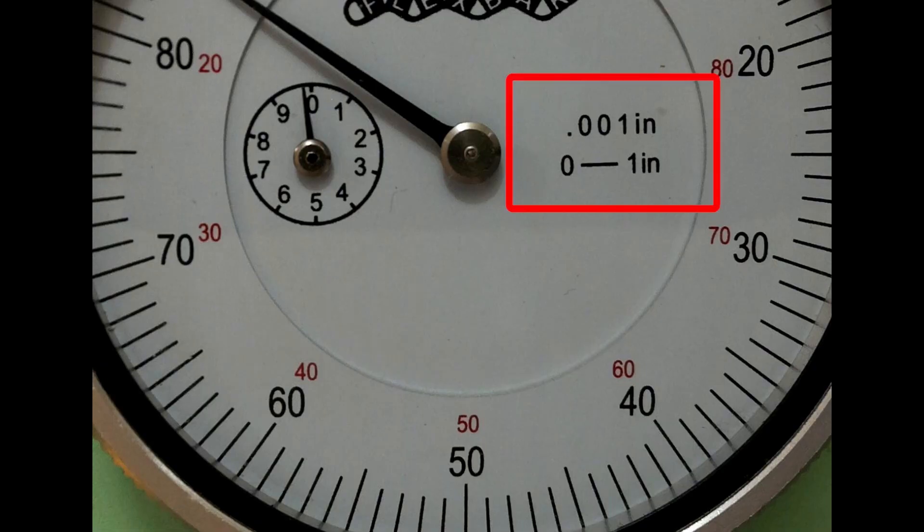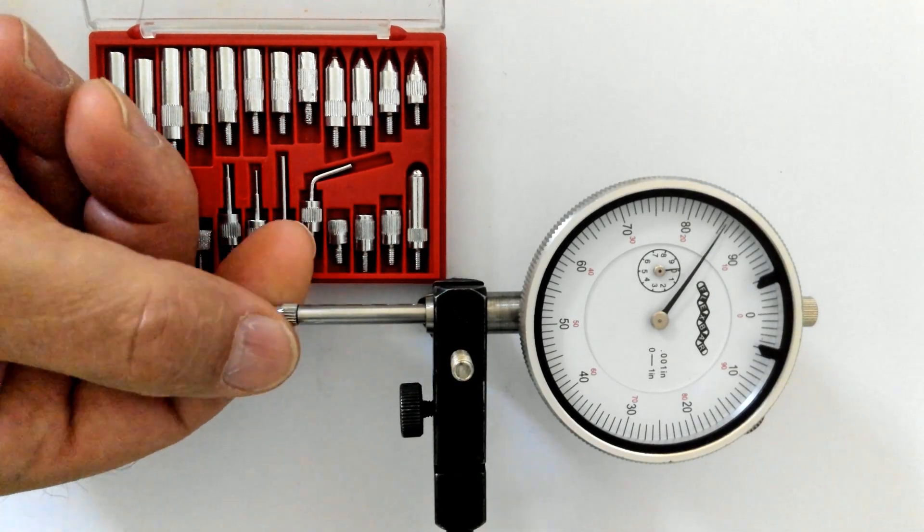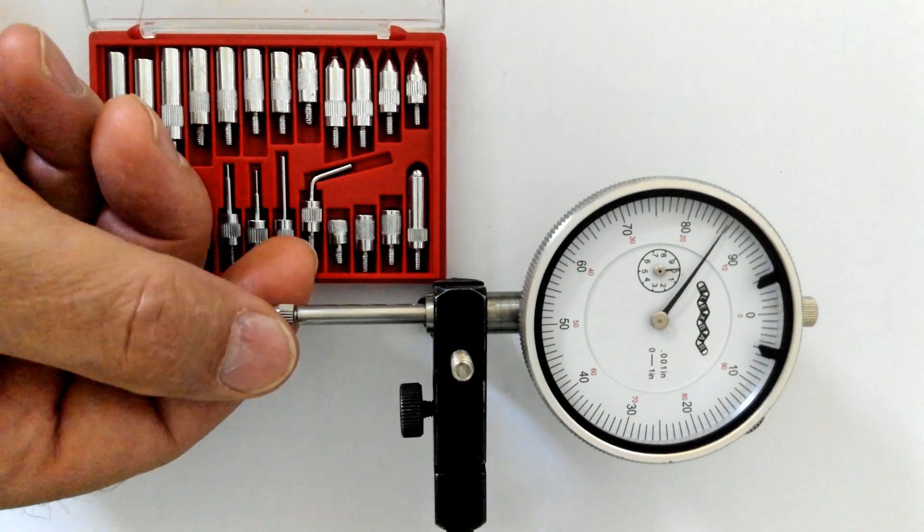The dial accuracy and total amount of movement is noted on the face of the dial. There are replacement tips for standard dial indicators for special movement conditions.